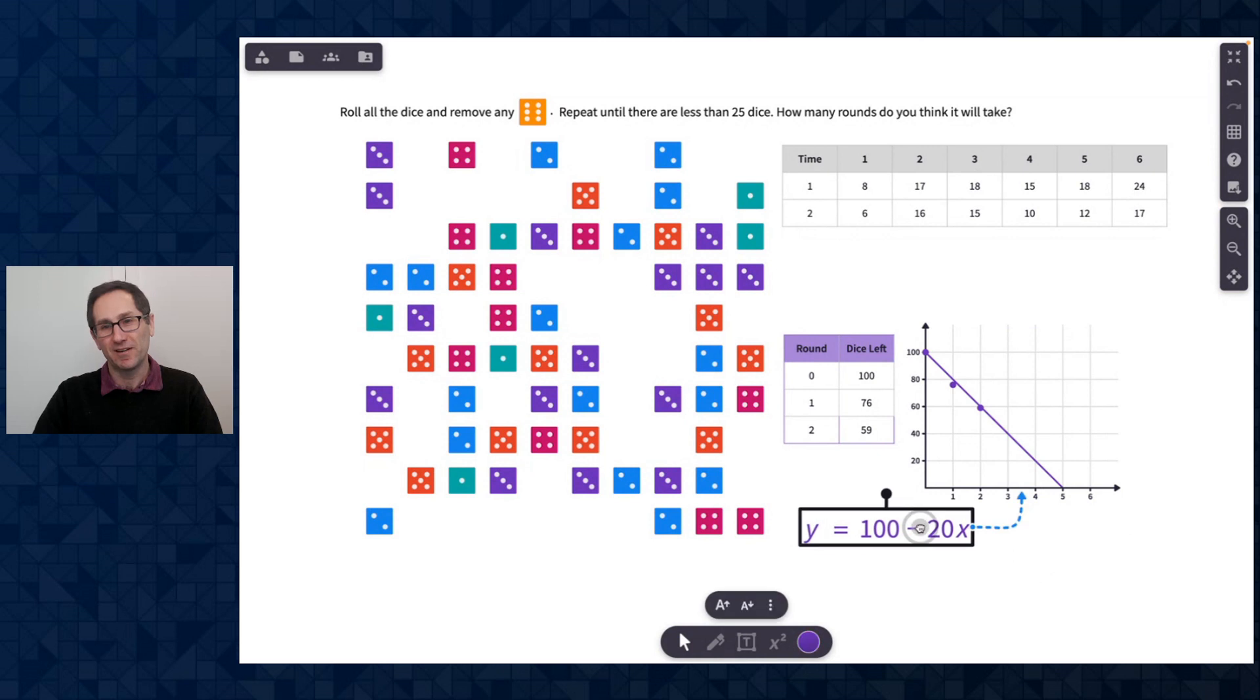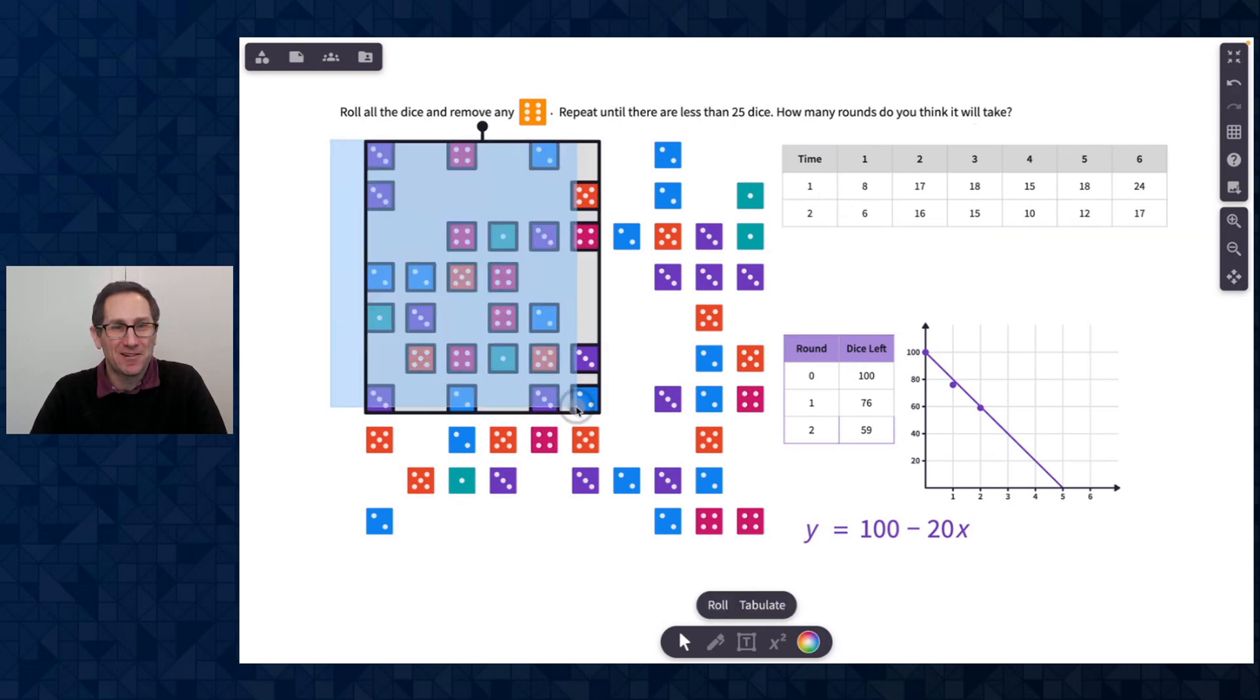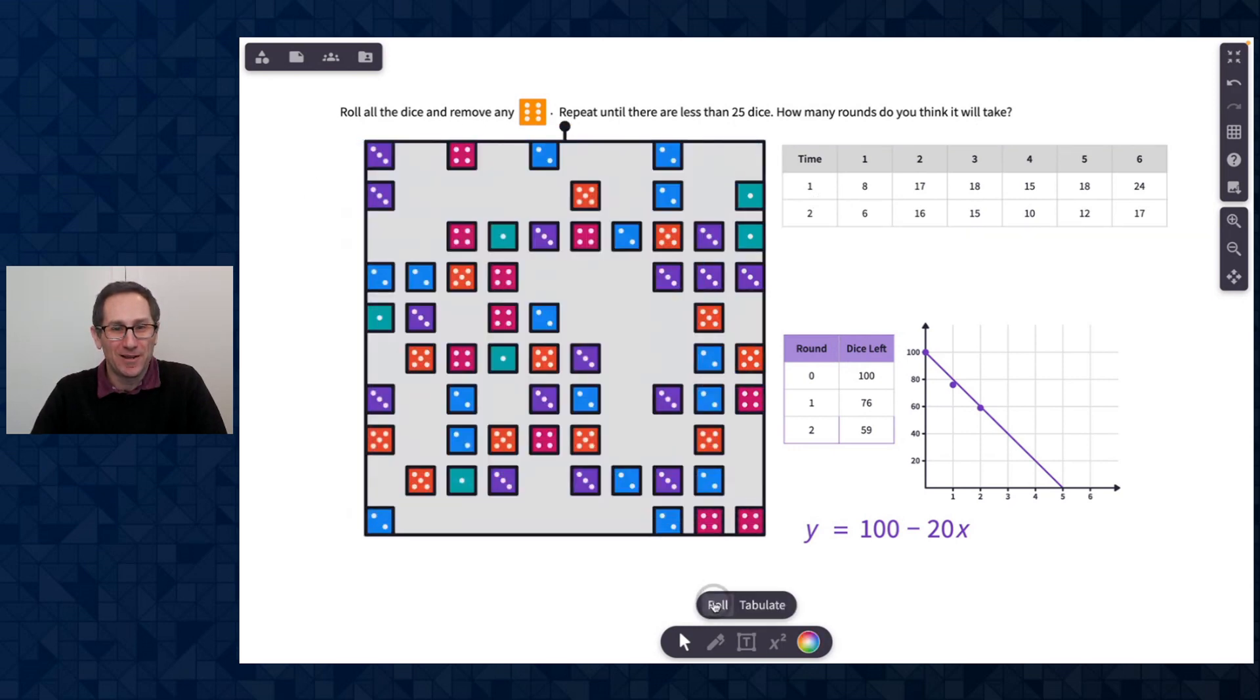So there we go. That actually seems pretty good, right? It seems to model that nicely. So now maybe I think I'm going to get to 25 around round three or four. You might already know where I'm going with this, but so far I'm predicting it with a linear equation and let's see how it goes. So I'm going to click all these and roll again.